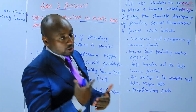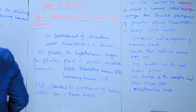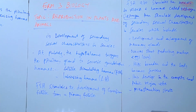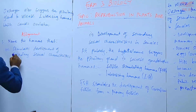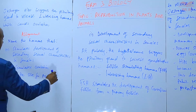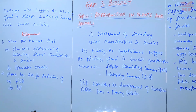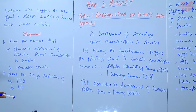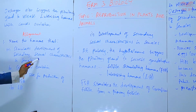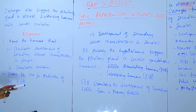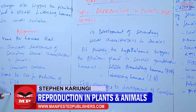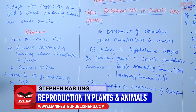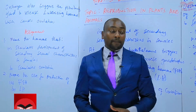We'll continue with this when we get into more details about menstruation and the menstrual cycle. For a short assignment: question one — name the hormone that stimulates development of secondary sexual characteristics in females, and name the hormone that stimulates ovulation. Question two — name the site for production of FSH and LH, that is follicle stimulating hormone and luteinizing hormone. Goodbye.